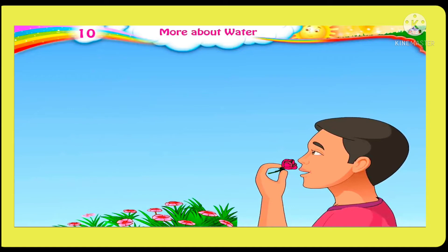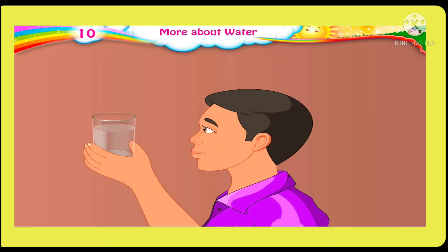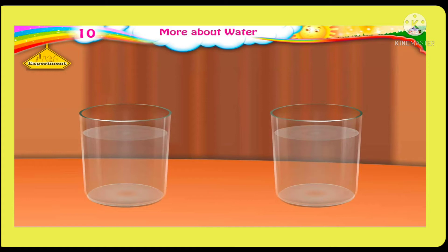On smelling a flower, we get to know whether it is fragrant or not. When we taste a slice of ripe mango, it tastes sweet. Similarly, what do we get to know when we see a glass of clean water? Does it have a smell? Can we tell how it tastes after drinking it? Yes, we get to know that pure water does not have color, smell, or taste. Now let's do an experiment.